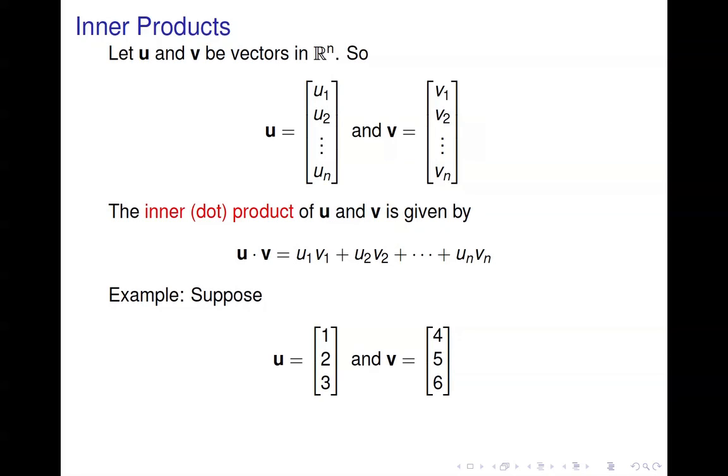For an example, suppose we have these two vectors, u and v. To compute their inner product, we just match up elements again, so 1 times 4 plus 2 times 5 plus 3 times 6, and we end up with 32. So the inner product of two vectors yields a scalar value.